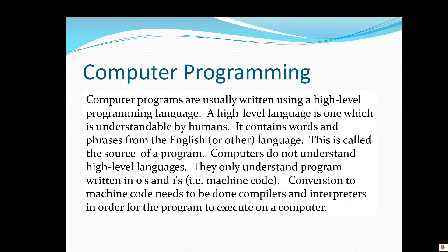One thing you need to recognize is that when you write in a high-level language, the computer itself doesn't understand it. The CPU cannot handle English-like statements — a computer is based on ones and zeros. So we have to go through a process of taking this English-like language, like C++, and converting it to zeros and ones. Fortunately, we don't manually have to convert it — we can use what's called a compiler, or another tool called an interpreter. A compiler is the main one. You push one button, and the compiler goes through the process of making all the conversions for you.